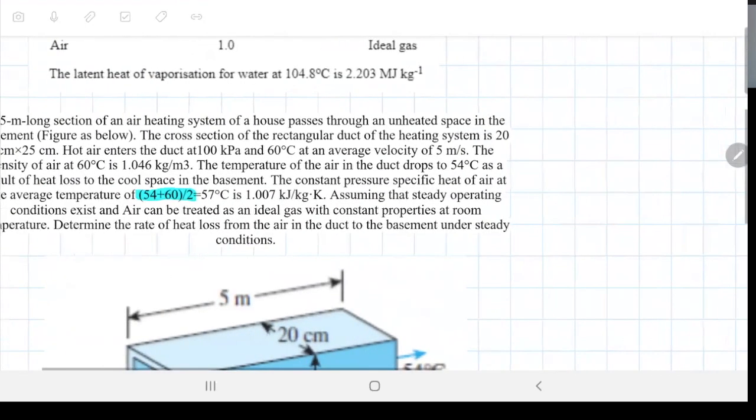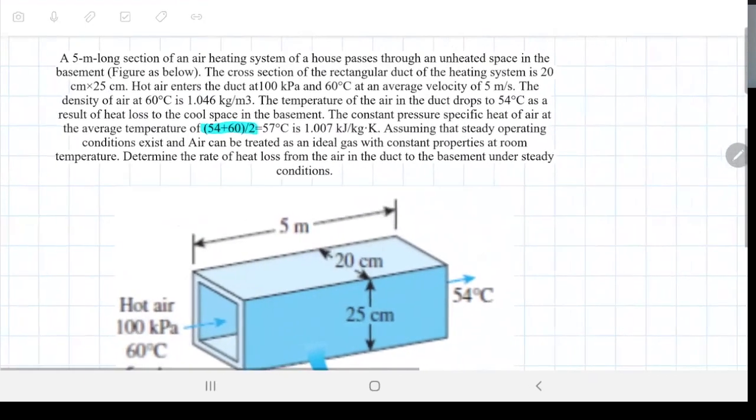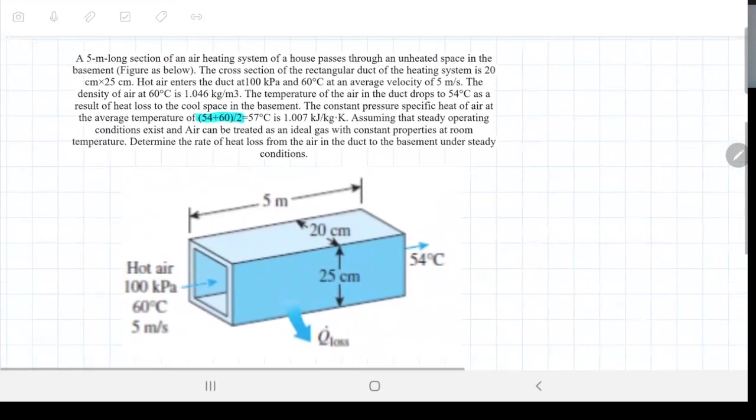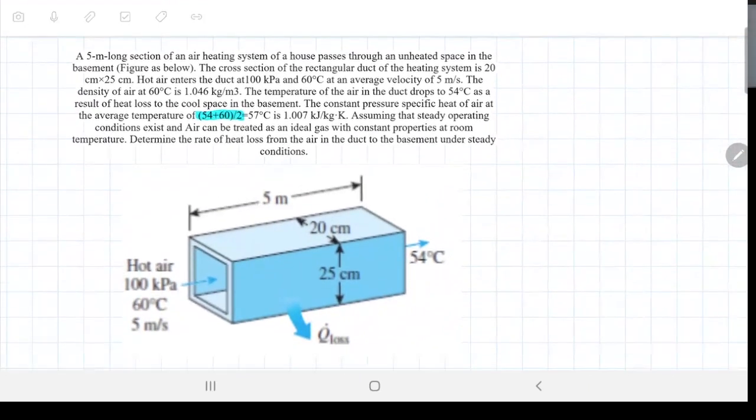Okay, so let me just zoom in. So in problem number three, there's a lot of words, but don't be mistaken by the words. It's just pretty much describing the picture that you're seeing there. So we have five meter long section of air heating system of a house that passes through an unheated space in the basement.